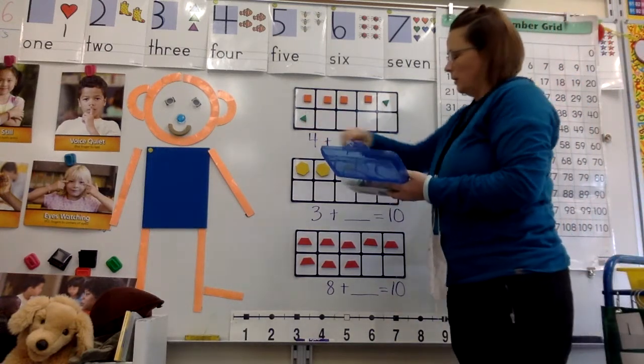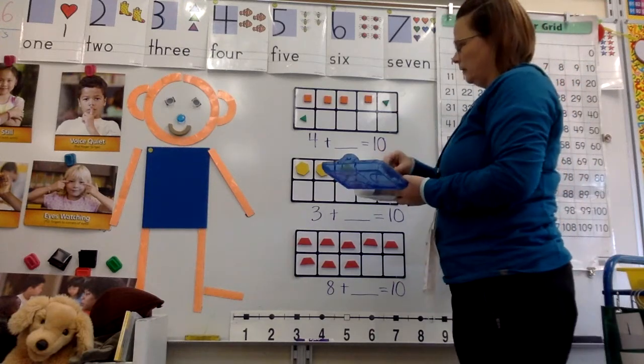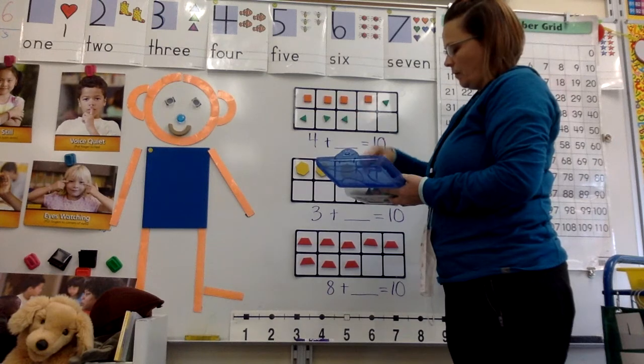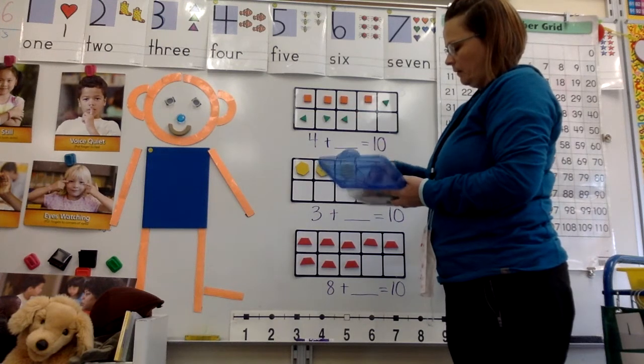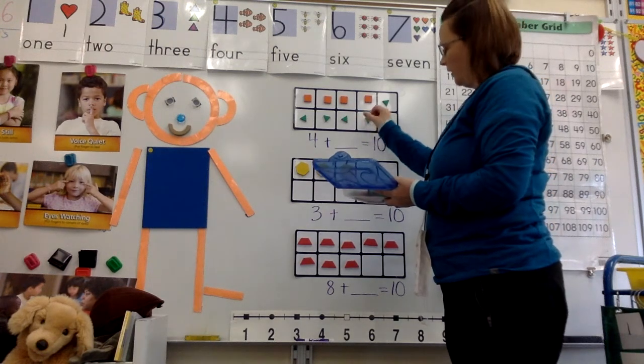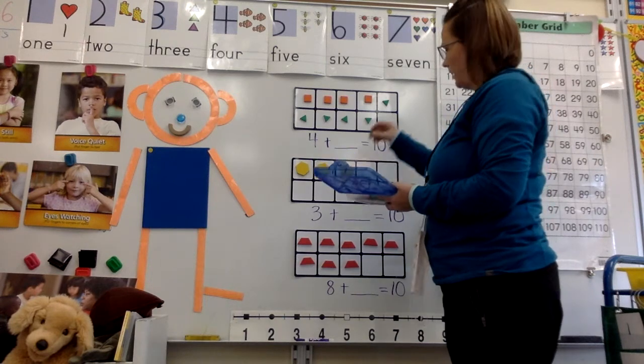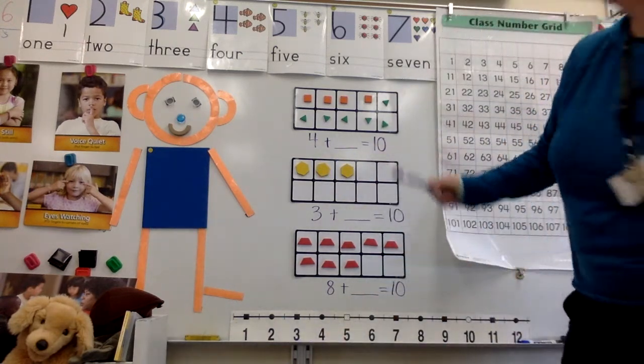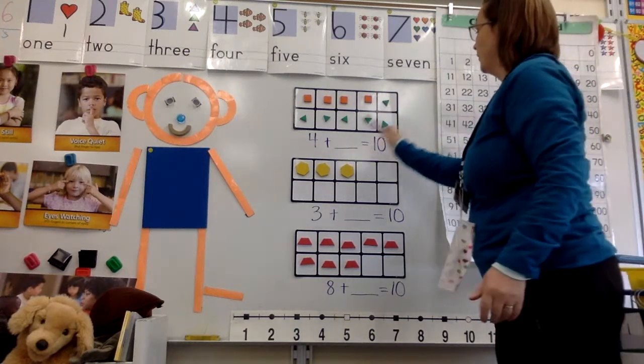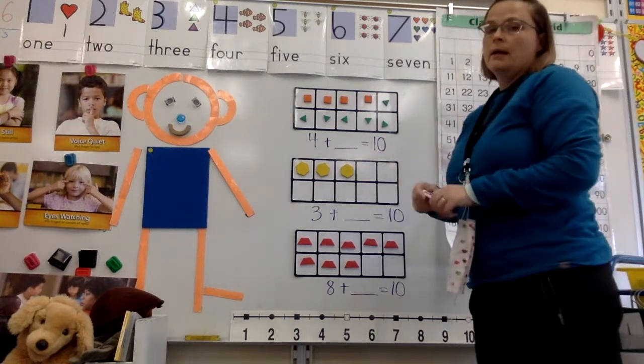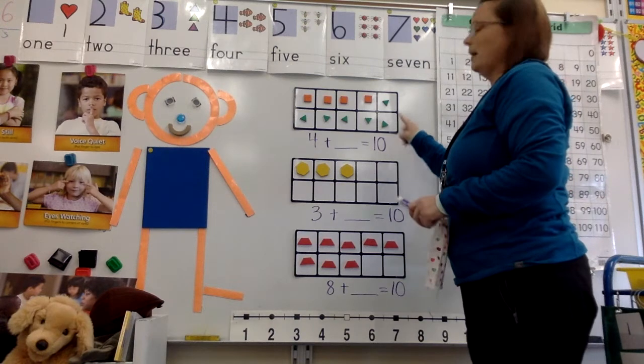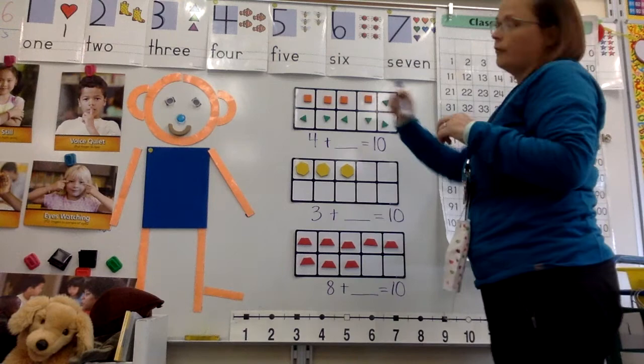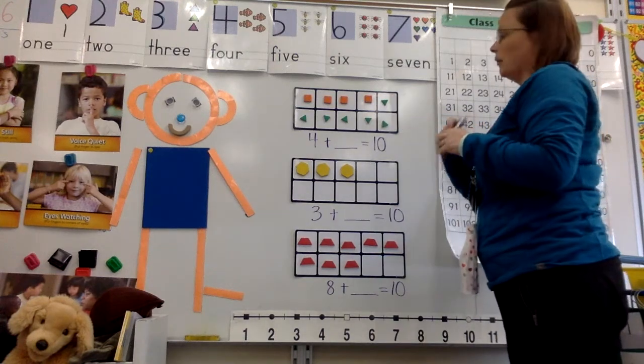So I'm gonna use these triangles. I'm gonna fill it up. I'm gonna count it as I fill it: one, two, three, four, five, six. So I can see that four plus six equals ten. I know it equals ten because this is my ten frame, and when it is filled, it makes ten.